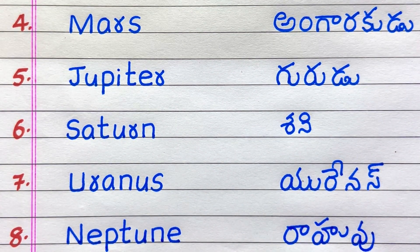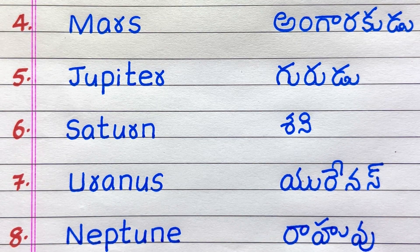The 4th name of the planet is Mars. In Telugu it is called as Angarakudu.